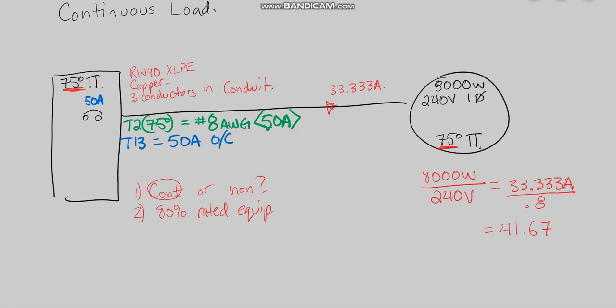When we're doing these branch circuit calculations, step one should always be, is it a continuous or non-continuous operation? That's dependent on what the load is doing, how much time is it running for. The second question, is it 80% rated equipment or 100% rated equipment? That will help us determine whether or not we're going to apply this 80% correction factor to our load to inflate to a higher minimum capacity to select a larger conductor, which leads to a larger 50 amp overcurrent.